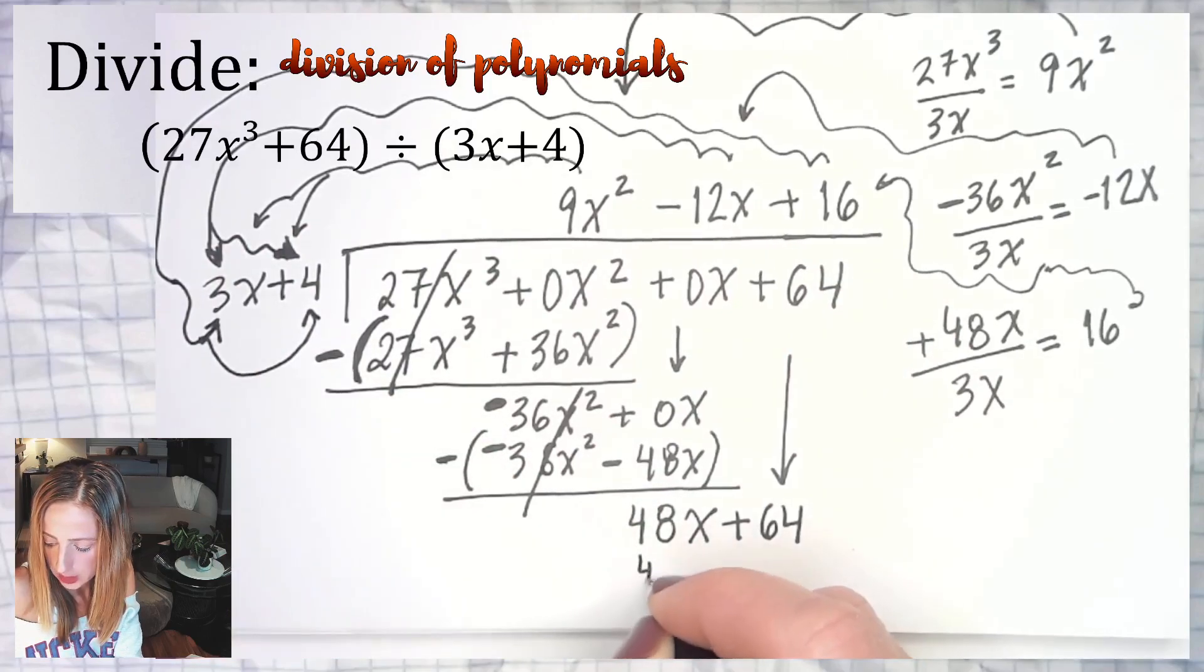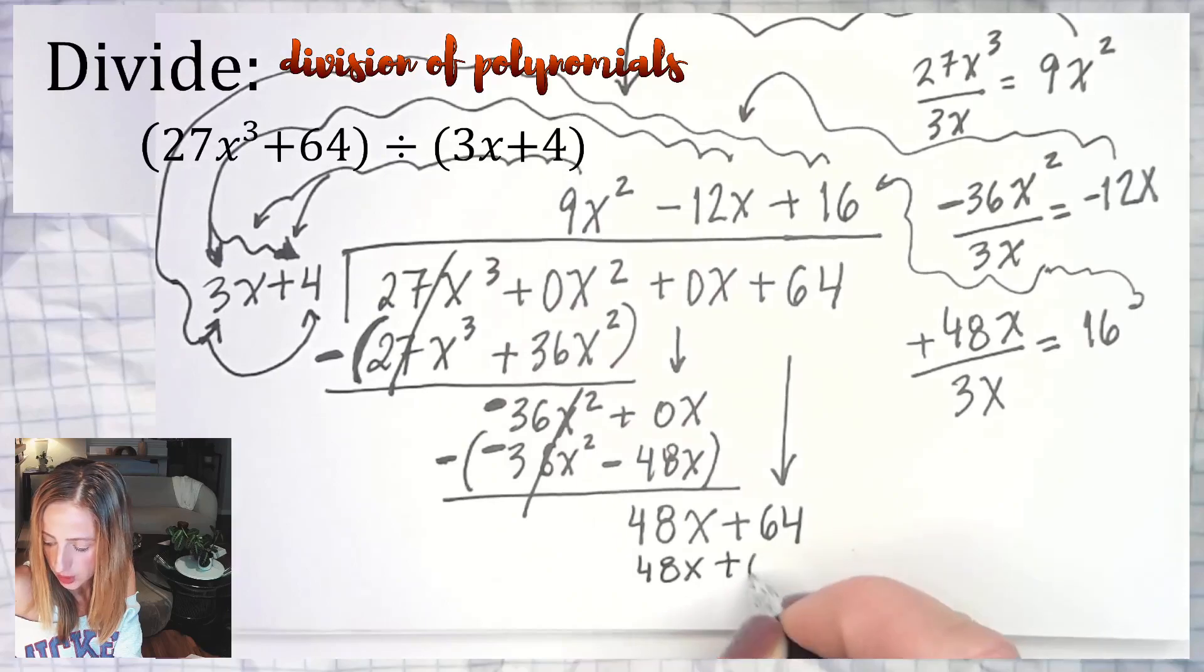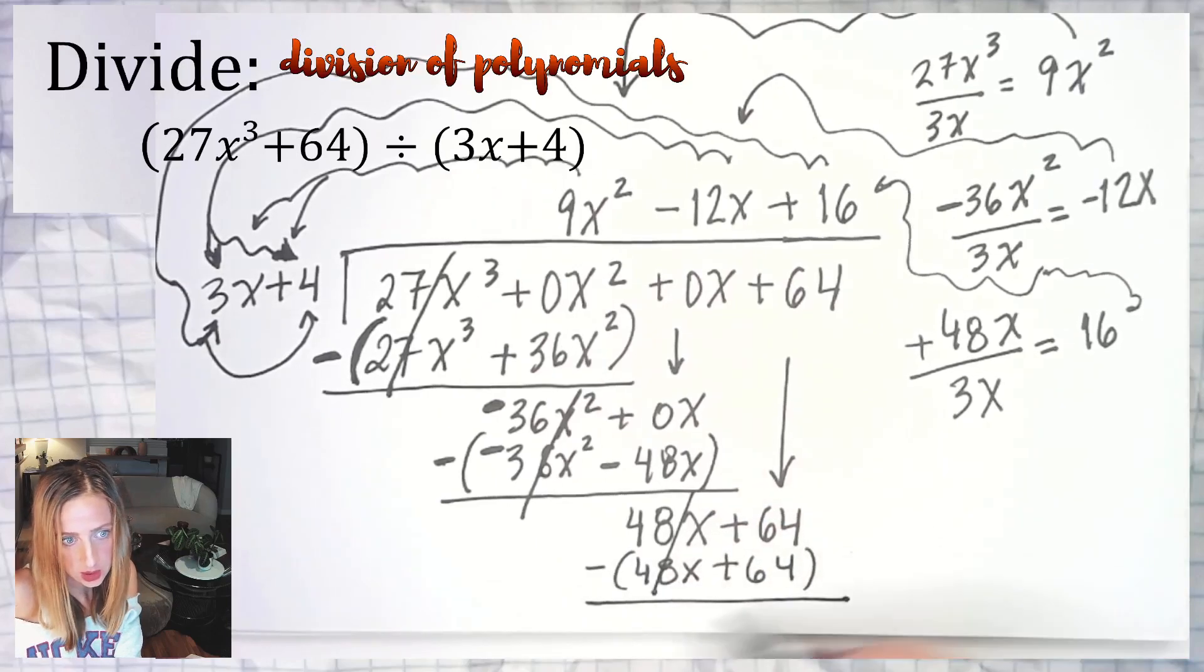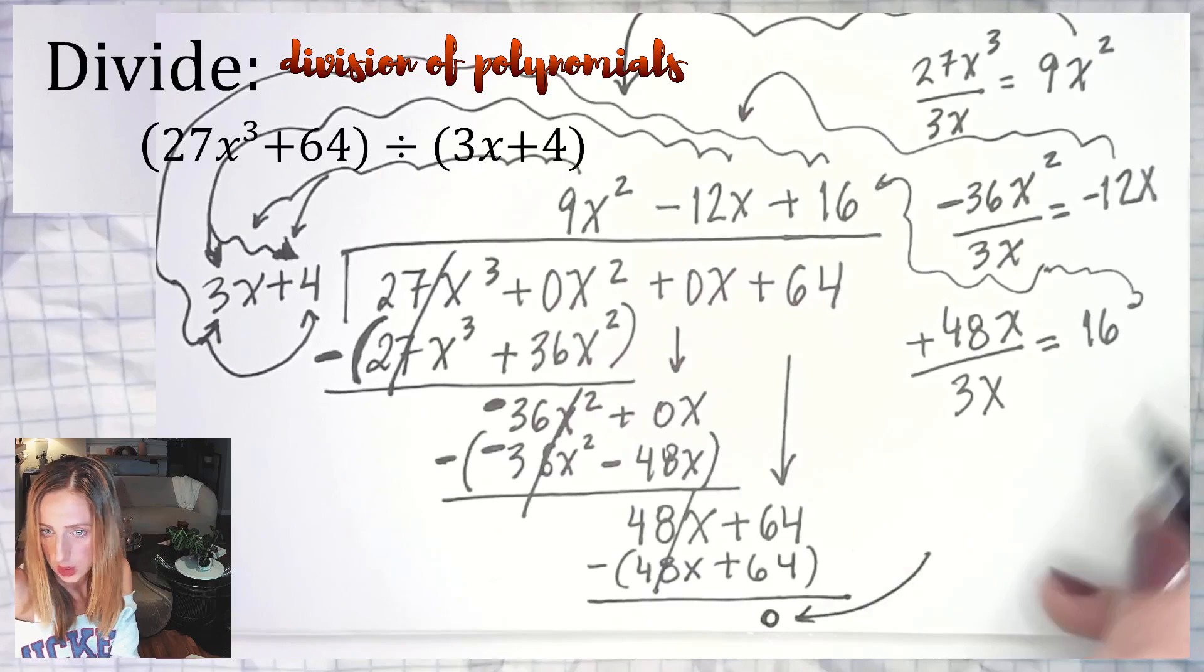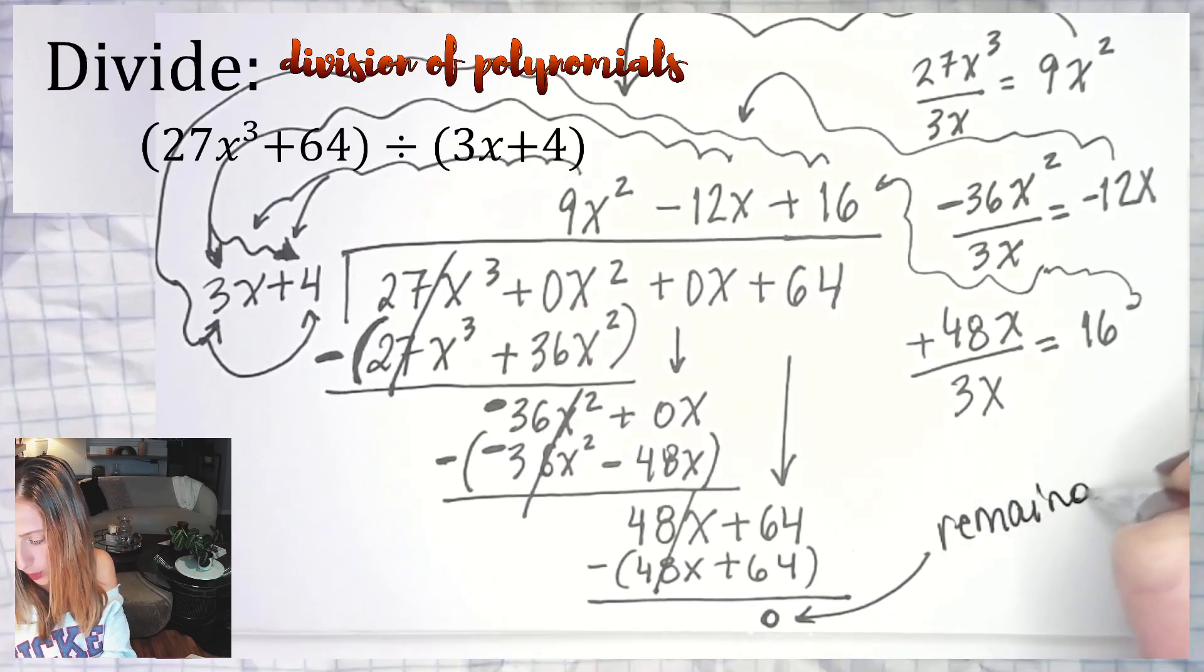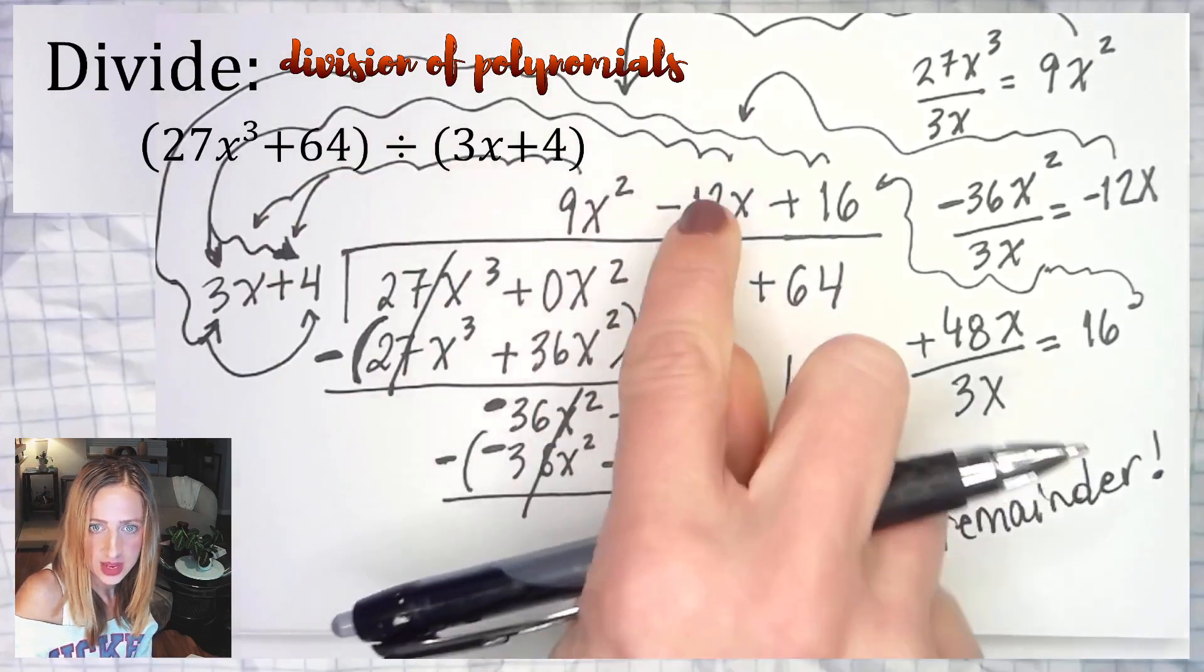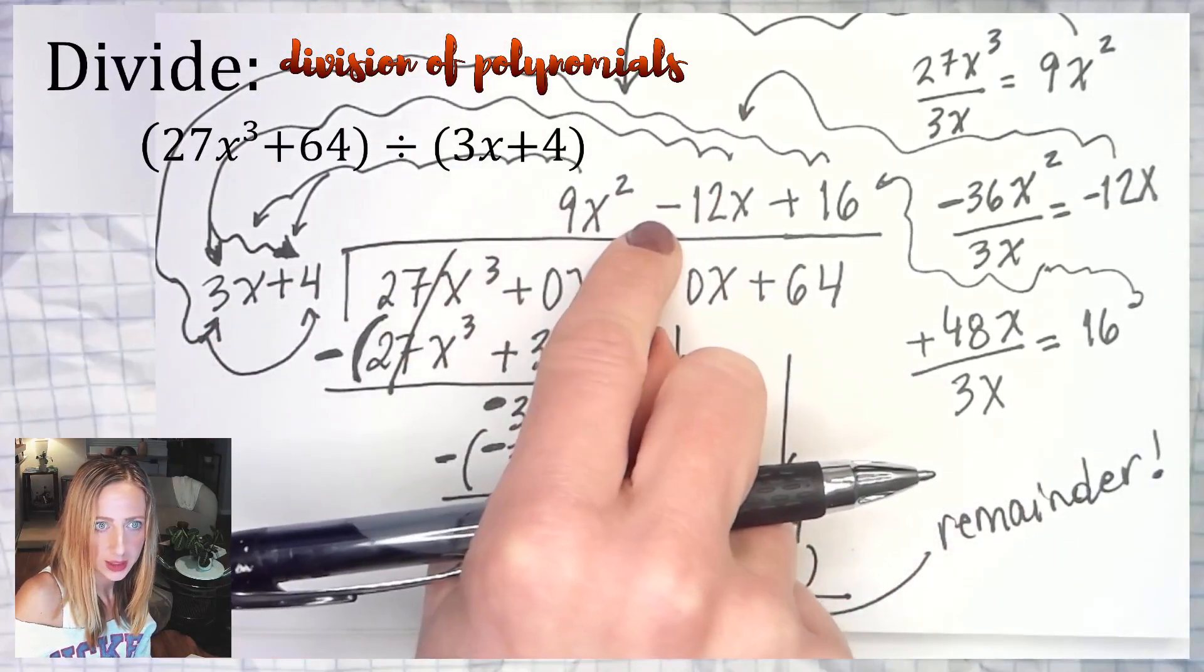16 times 3 is 48x, 16 times 4 is 64. Parentheses, minus sign, underline, cancel: 64 - 64 = 0. That 0 is your remainder. If your remainder is 0, I hope we all remember what that means—it means that this and this are both factors of that thing right there.